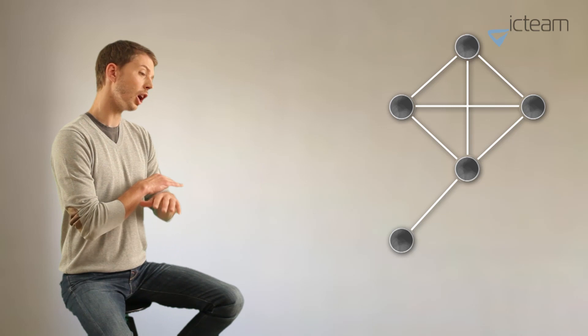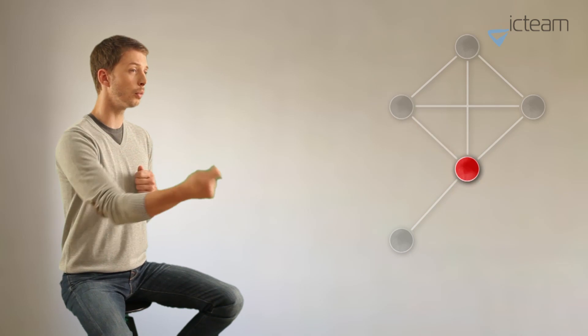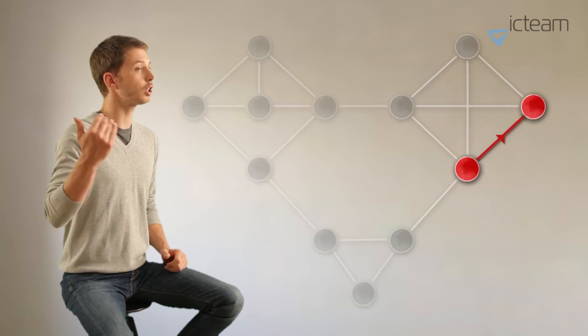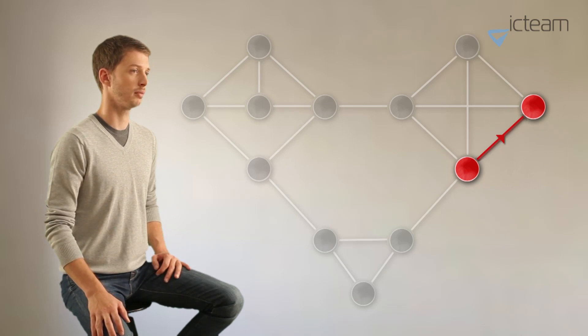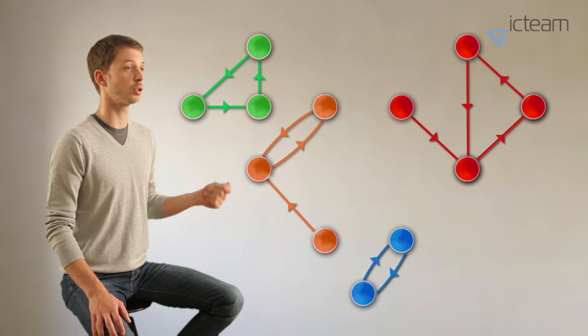We start with an initial configuration of nodes where they are all independent one from another. The first step is to let each node choose its best neighbor, the one for which merging both nodes into a single community will lead to the largest increase in the density. This creates a new graph with edges that represent those selections.